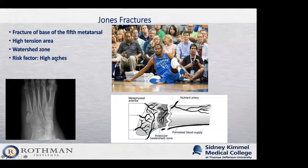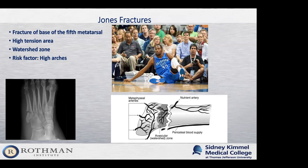I'll use Jones fractures as an example. A Jones fracture is an eponym describing a fracture to the base of the fifth metatarsal. This area is prone to fracture because it's a high-tension, high-load area and a watershed zone — there's great blood flow behind and in front of it, but right where these fractures occur, blood flow is not great. This has implications not only for the likelihood of fracturing, but also for healing — poor blood flow means it won't heal well, which changes our treatment algorithm compared to other bones.